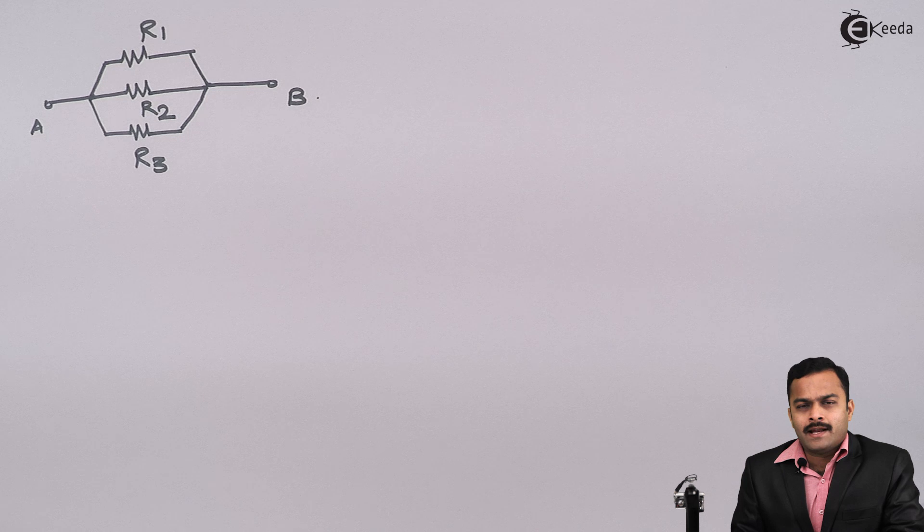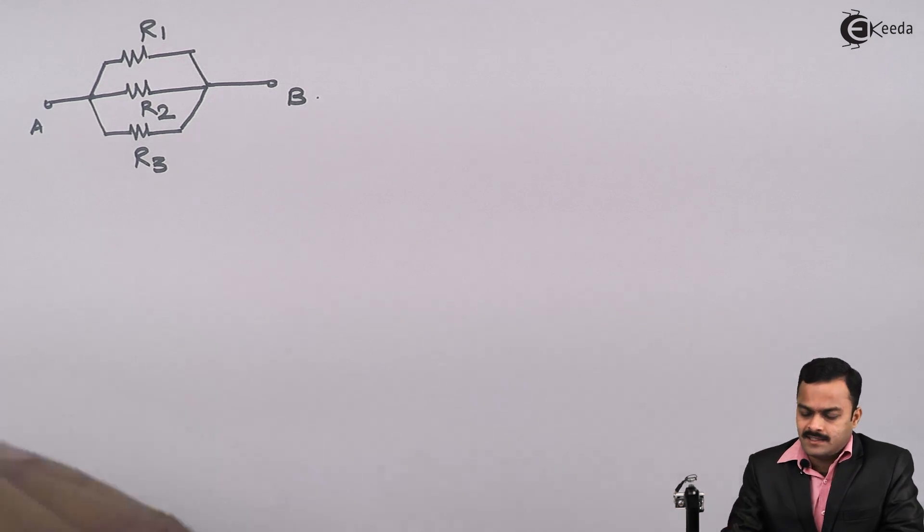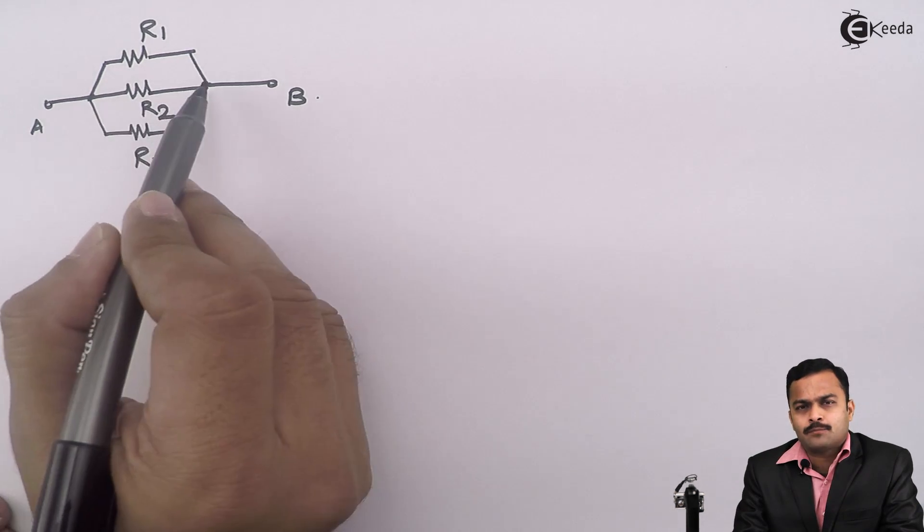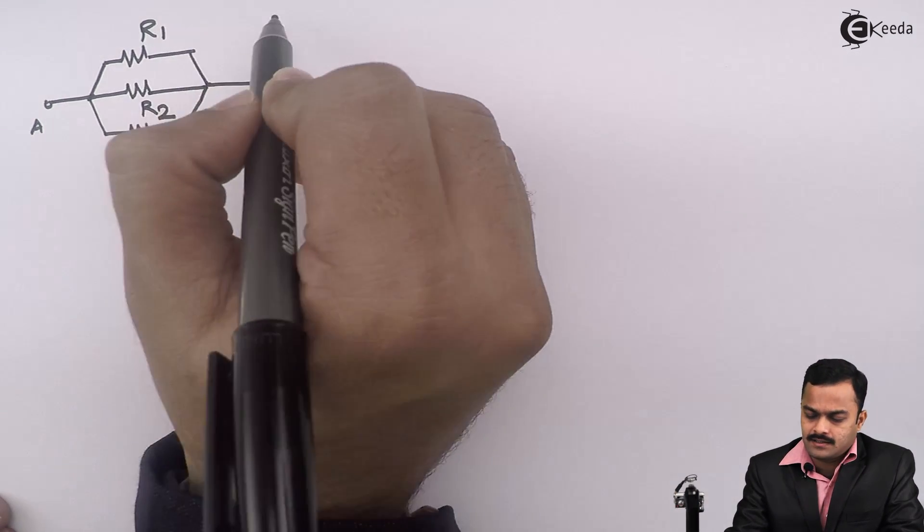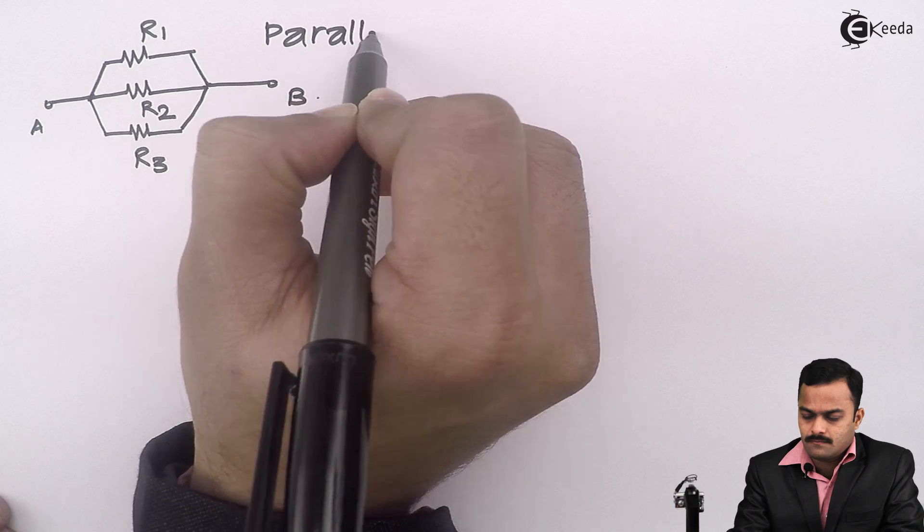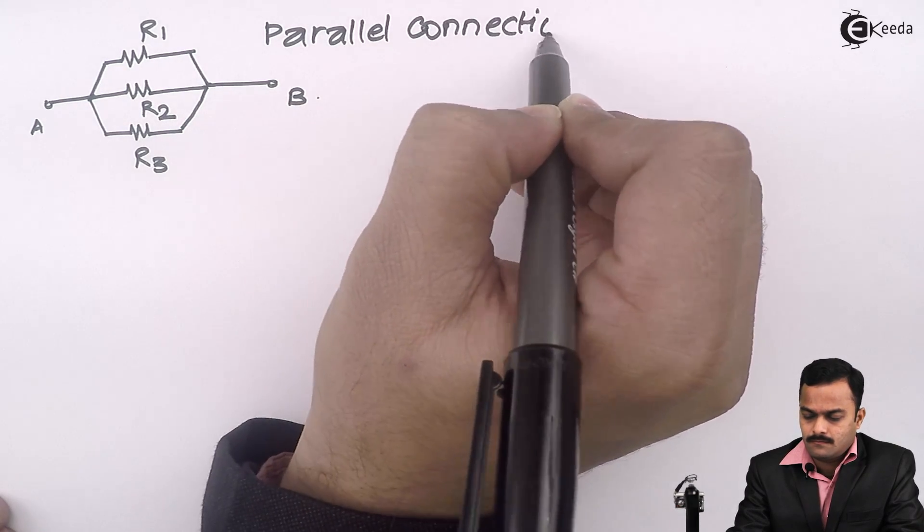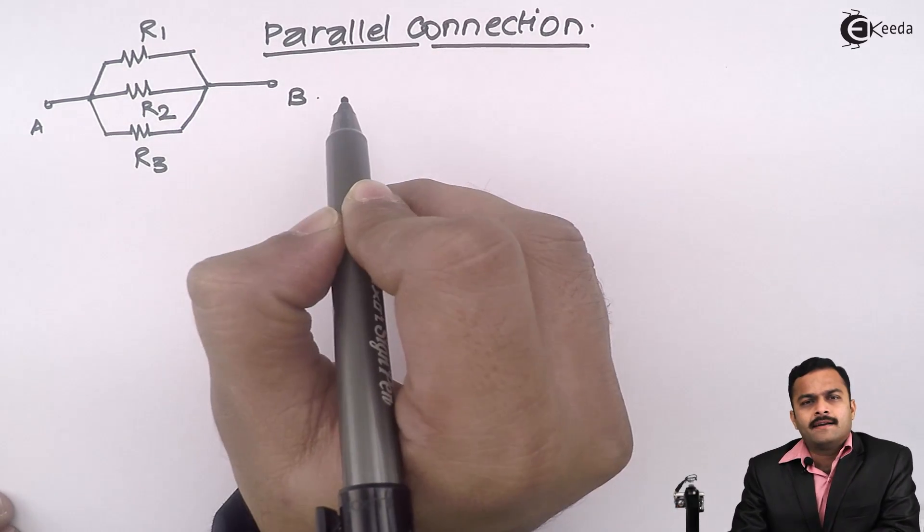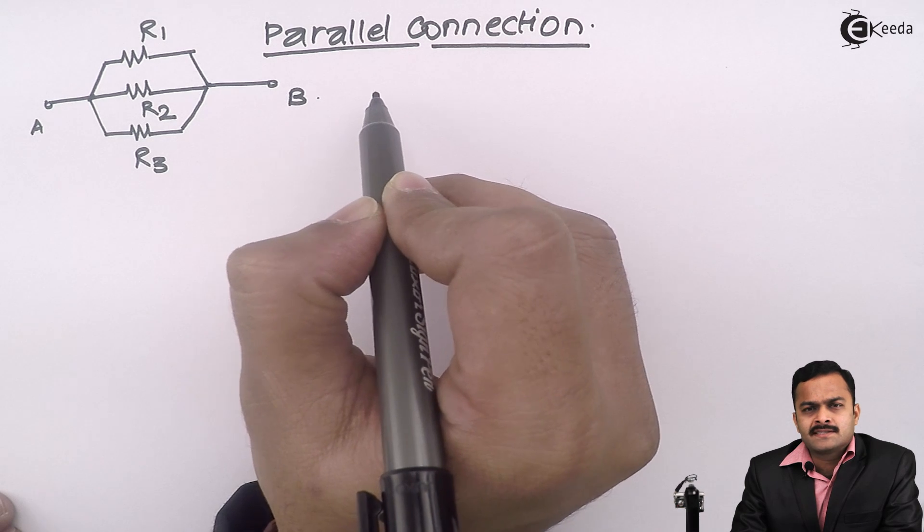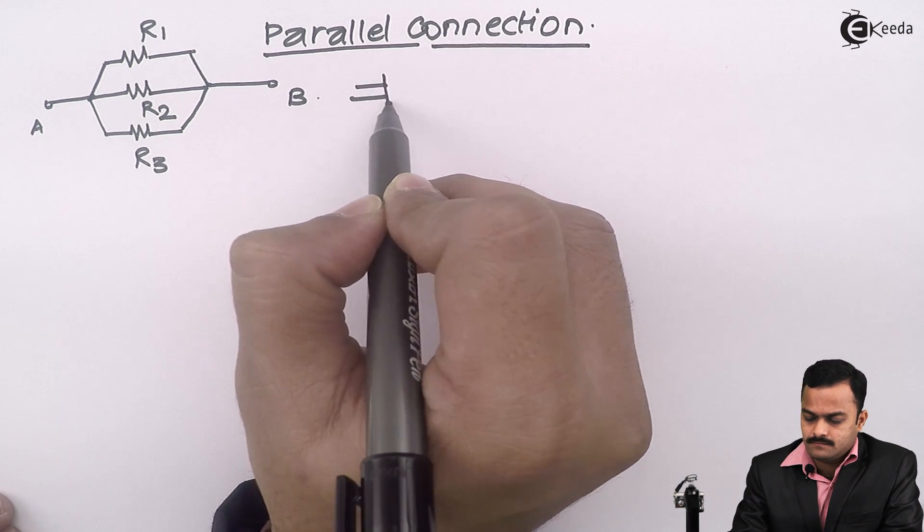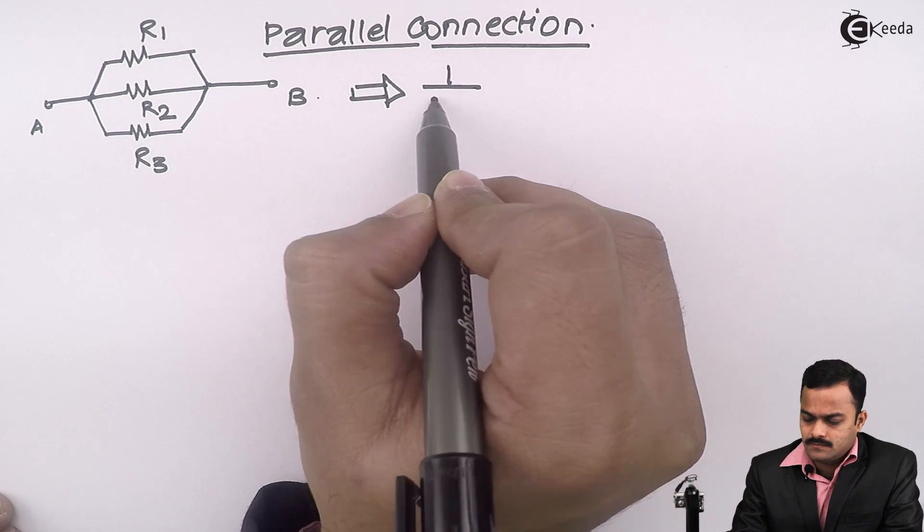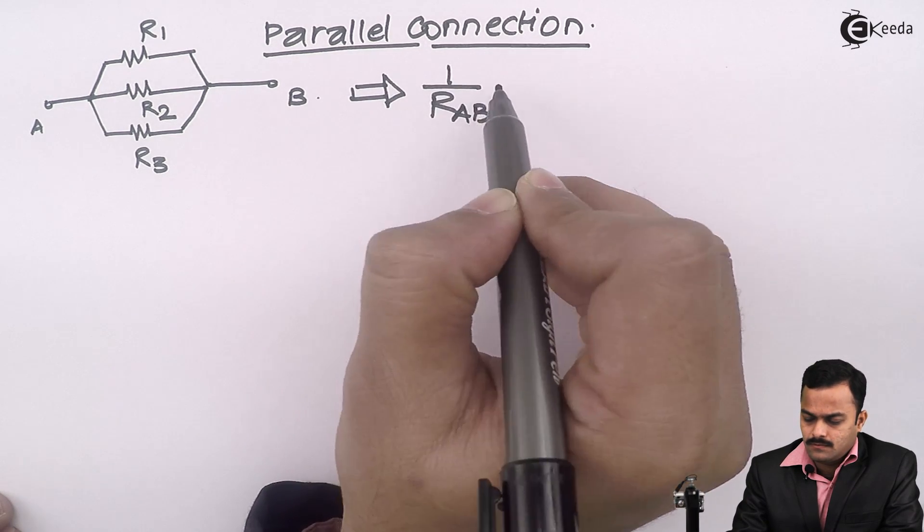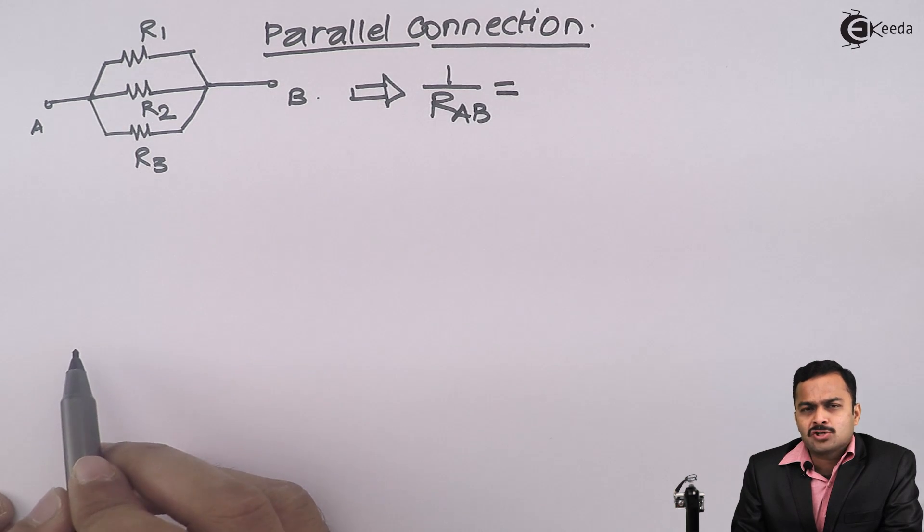Like this. So whenever resistors are connected between two similar points, then I can say the connection given is a parallel connection. And the equivalent resistance is given like this: the reciprocal of the equivalent will be nothing but the addition